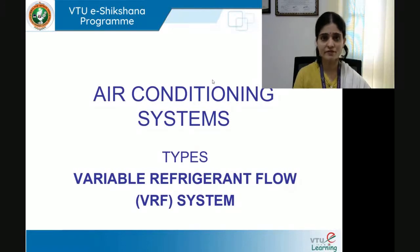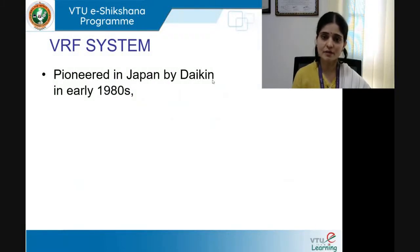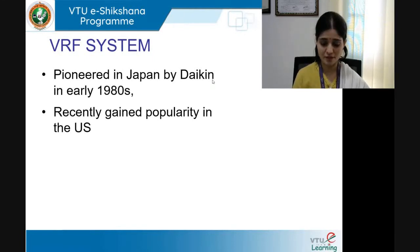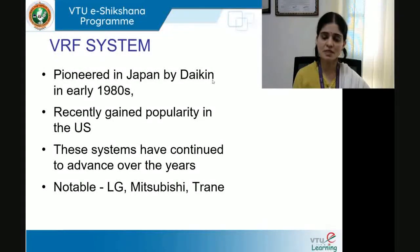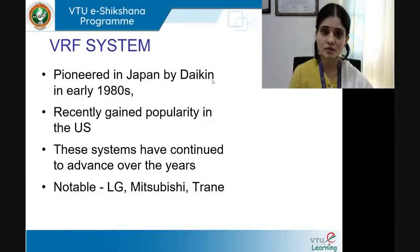Moving on to the next type: Variable Refrigerant Flow, or VRF system. It was pioneered in Japan by Daikin in the early 1980s — about three decades of innovation — and is quite popular. It caught on very quickly, and has recently gained popularity in the US as well. The VRF system started with Daikin but has been notably adopted and floated in the market by LG, Mitsubishi, and Trane. You can visit these manufacturers' websites and catalogues for specifications.